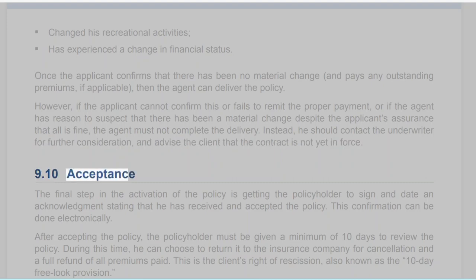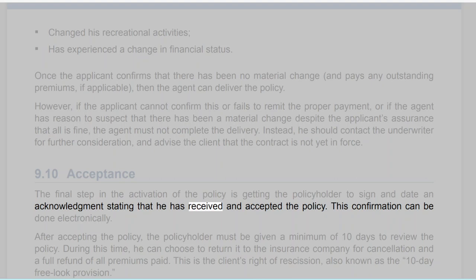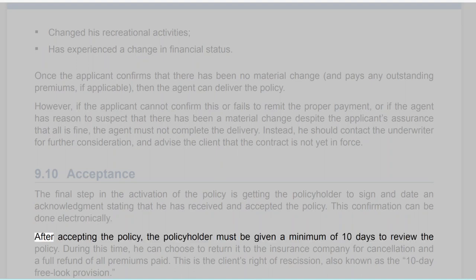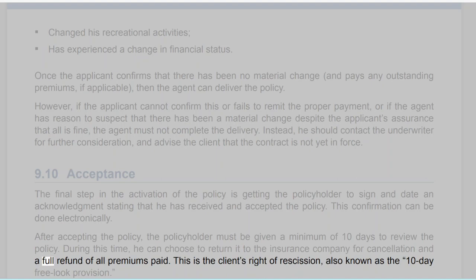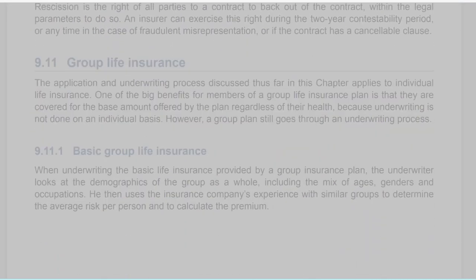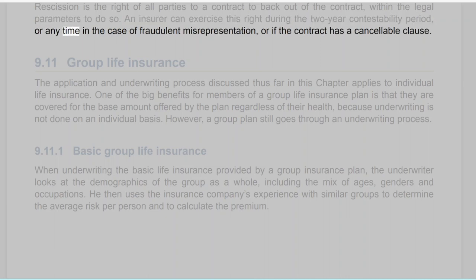Section 9.10: Acceptance. The final step in the activation of the policy is getting the policyholder to sign and date an acknowledgement stating that he has received and accepted the policy. This confirmation can be done electronically. After accepting the policy, the policyholder must be given a minimum of 10 days to review the policy. During this time, he can choose to return it to the insurance company for cancellation and a full refund of all premiums paid. This is the client's right of rescission, also known as the 10-day free look provision. Rescission is the right of all parties to a contract to back out of the contract within the legal parameters to do so. An insurer can exercise this right during the two-year contestability period, or any time in the case of fraudulent misrepresentation or if the contract has a cancelable clause.